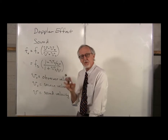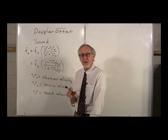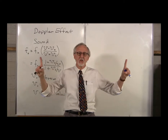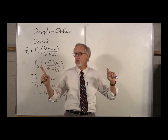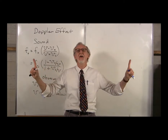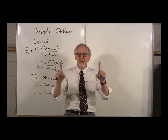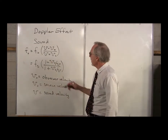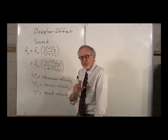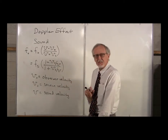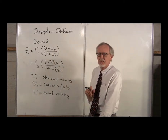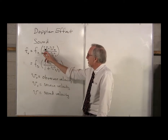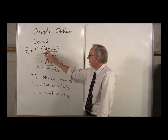We used a very particular sign convention: if the objects were moving away from each other, the source or observer velocity was positive, and if they were coming together, the velocities were negative. Now let's change this slightly by dividing the top and the bottom by the velocity of sound.